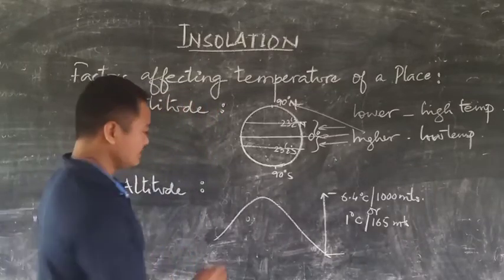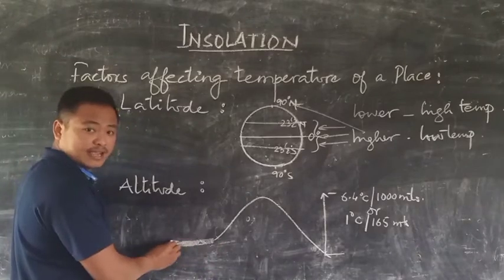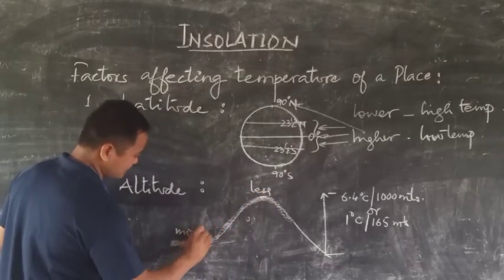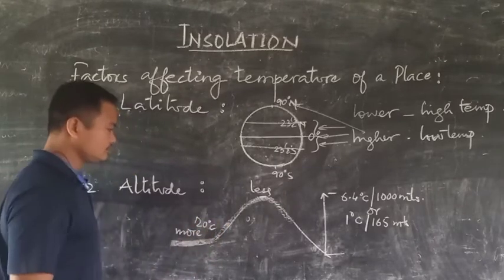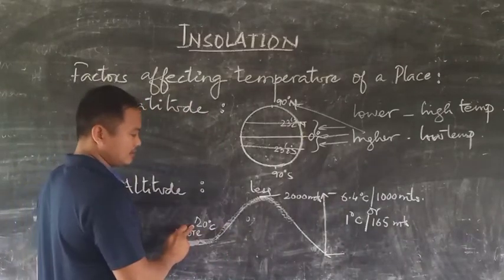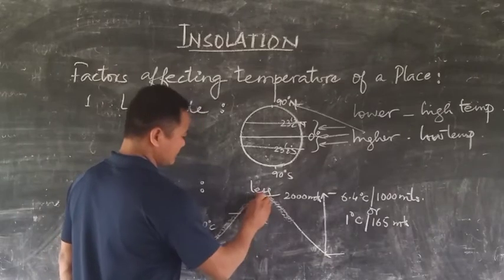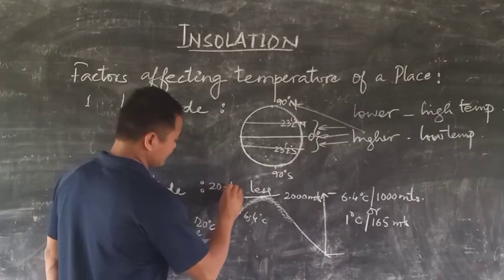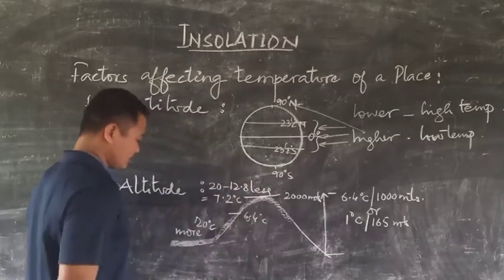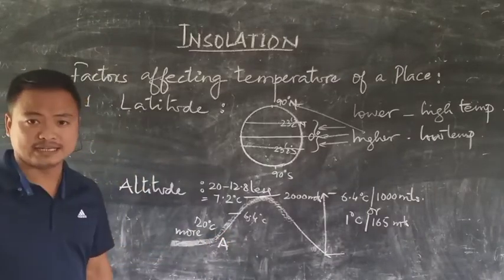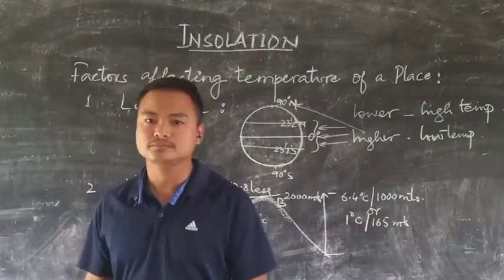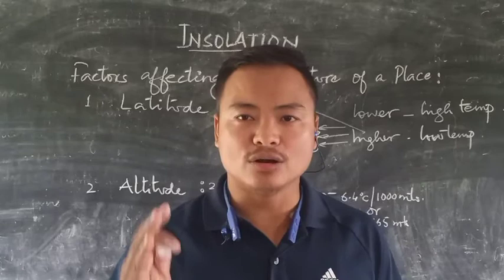Because of the lapse rate, temperature decreases with altitude. If the plane region has a temperature of 20 degrees centigrade and a mountain is at a height of 2000 meters, then for every 1000 meters it is 6.4 degrees decrease — so 12.8 degrees decrease over 2000 meters. Therefore, the temperature at the mountain top will be 20 minus 12.8, which equals 7.2 degrees centigrade.